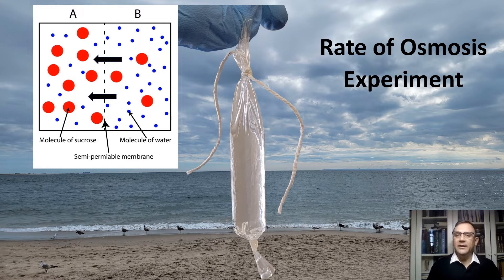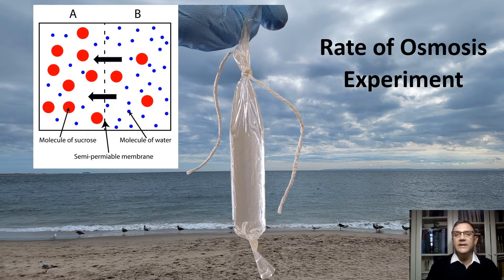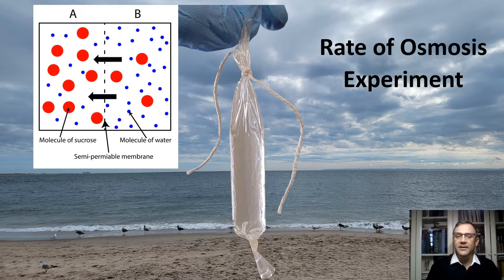Osmosis is the fundamental biological process that involves the movement of water molecules across a selectively permeable membrane. This process is driven by differences in solute concentration on either side of the membrane, leading to the movement of water from an area of low solute concentration to an area of high solute concentration. Osmosis is critical for maintaining cell homeostasis and plays a key role in various physiological functions, including nutrient absorption and waste removal.